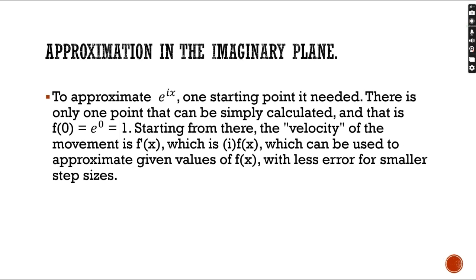Now, moving on to approximation in the imaginary plane. To approximate the function e to the ix, one starting point is needed. And there is only one point that can be calculated, and that is f of 0, where e to the 0 power equals 1. Starting from there, the velocity of the movement is f prime of x, which is i times f of x, because the derivatives of e to the ix is i times e to the ix. This can be used to approximate given values of f of x, with less error for smaller step sizes.